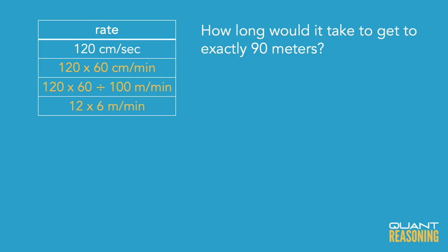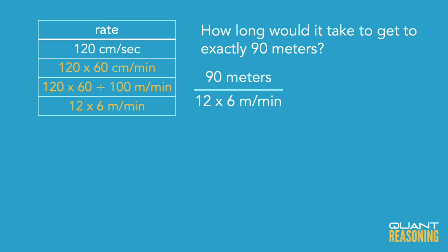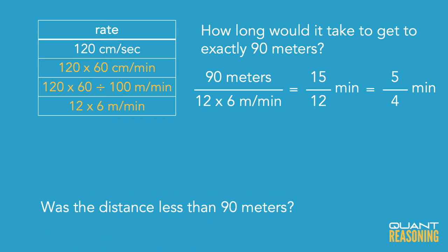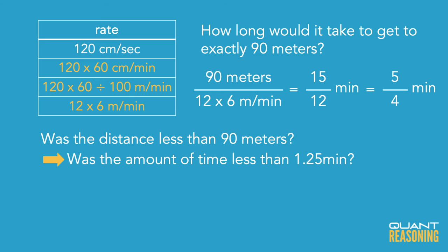The question wants to know whether the distance was less than 90 meters. So how long would it take at exactly 90 meters? We divide the distance of 90 by the speed of 72 (12 times 6). So 90 divided by 72: reduce the 6 to get 15 over 12, which is 5 fourths. Since the statements are in decimals, 5 fourths equals 1.25.